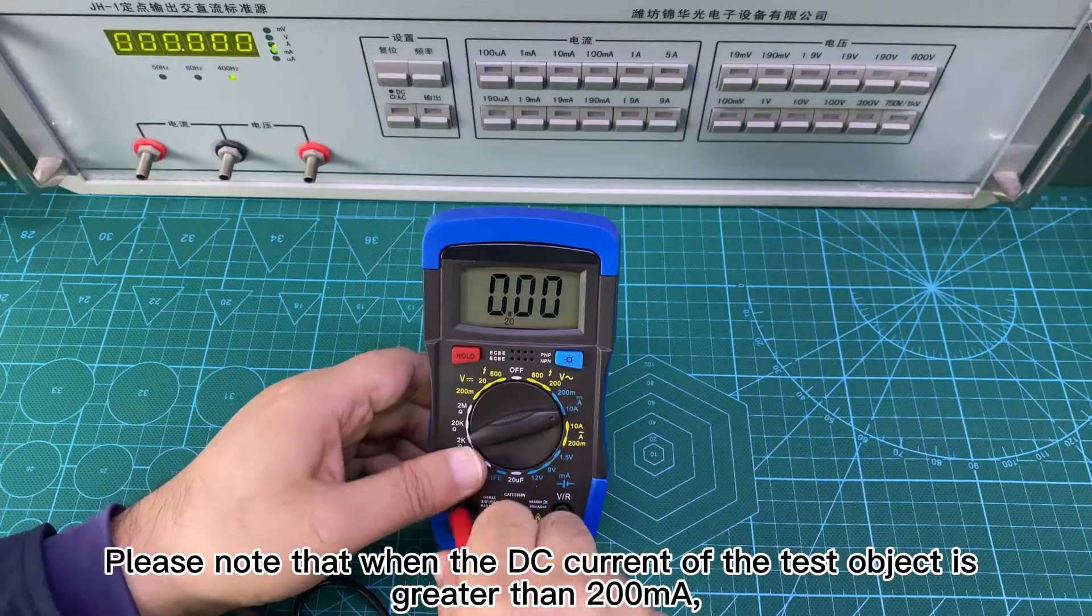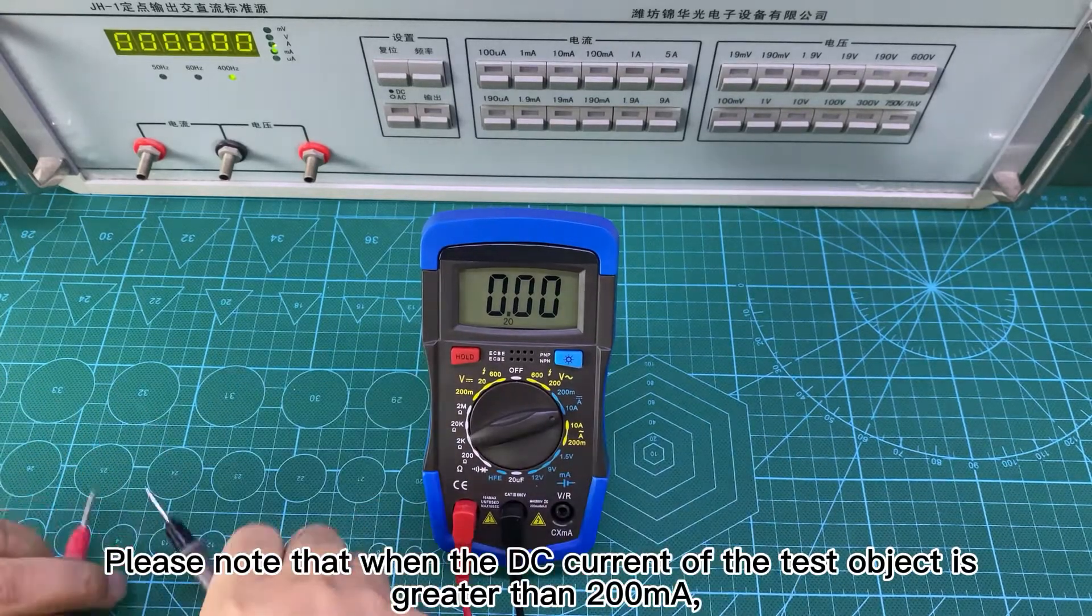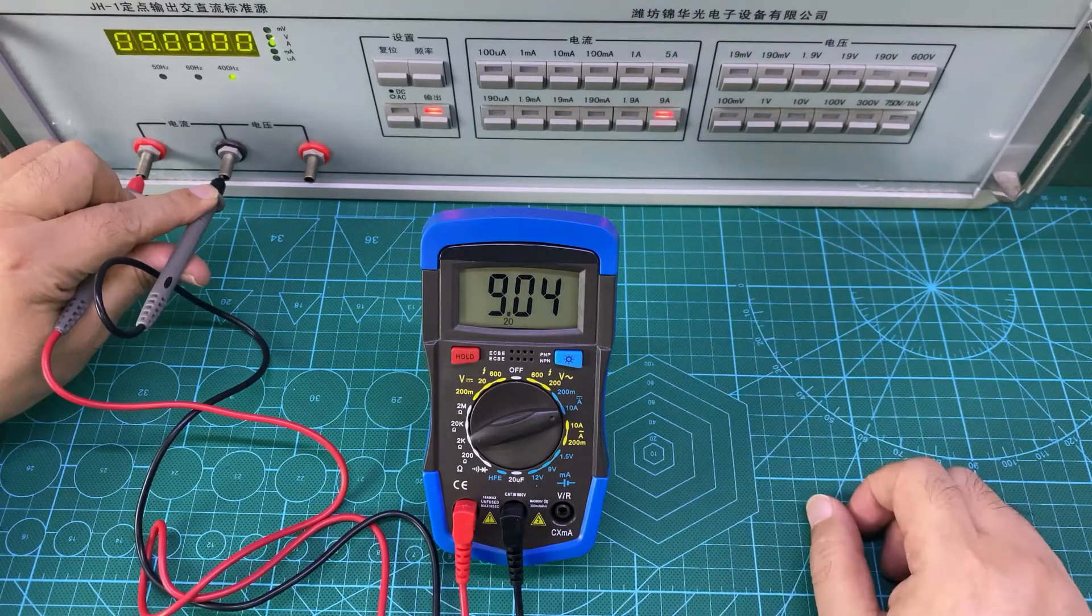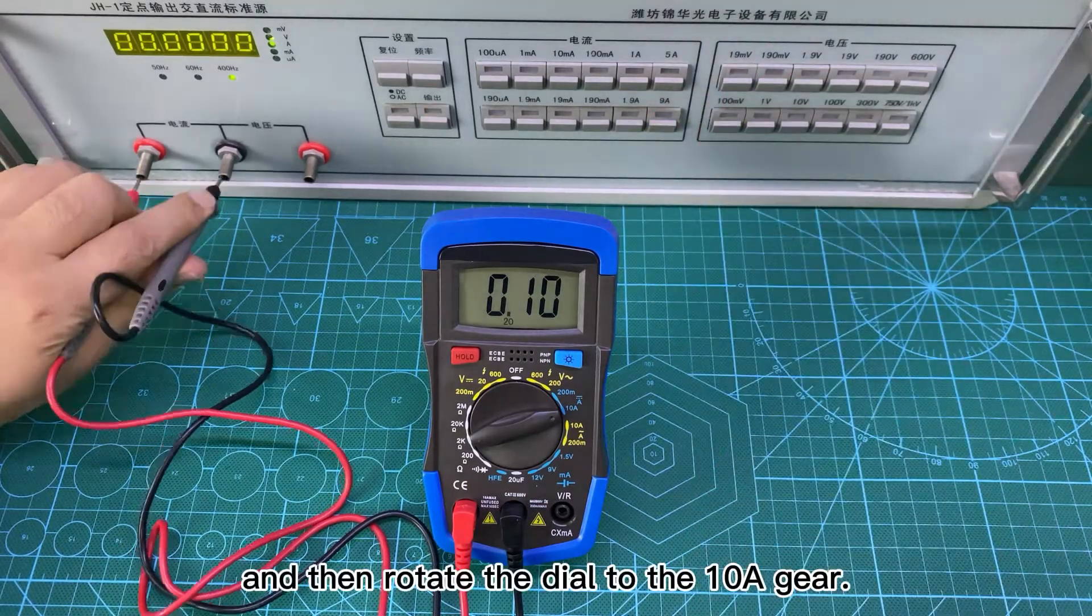Please note that when the DC current of the test object is greater than 200V, please insert the red test lead into the TANA hole first and then rotate the dial to the TANA gear.